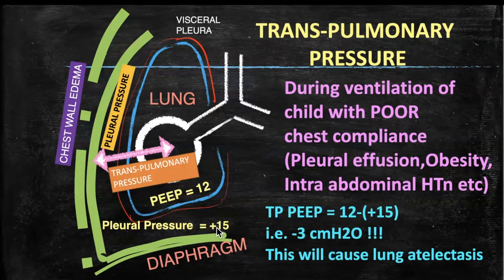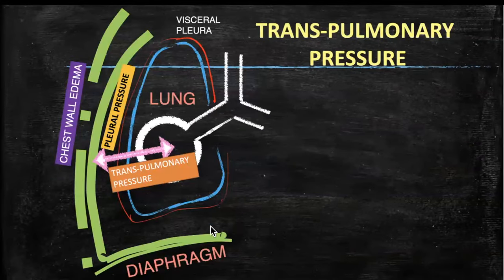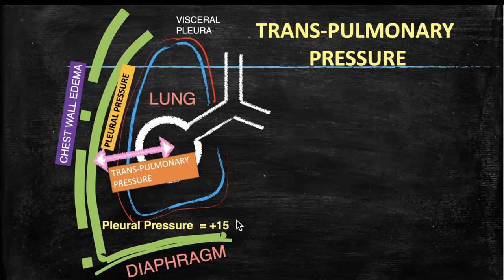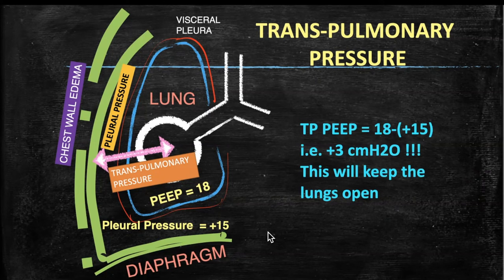In such cases you need to increase PEEP above the pleural pressure. If the pleural pressure is 15 and you set PEEP at 18, the trans-pulmonary pressure during expiration = 18 minus (+15) = 3 centimeters, which will keep the alveoli open. This is how trans-pulmonary pressure measurement helps titrate PEEP appropriately — setting PEEP above the pleural pressure measured through esophageal pressure monitoring.